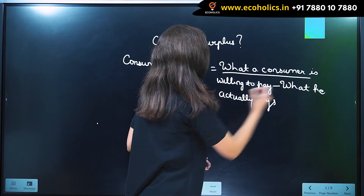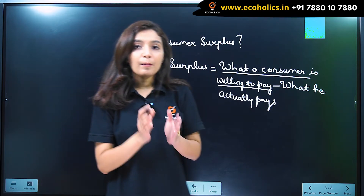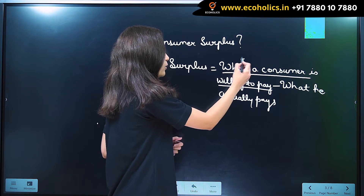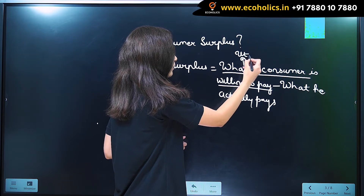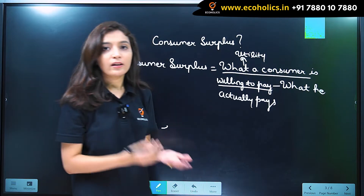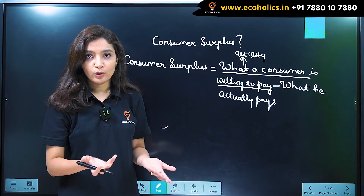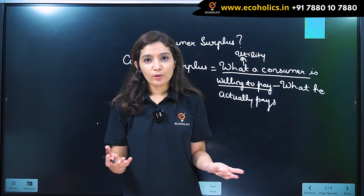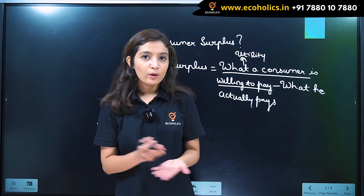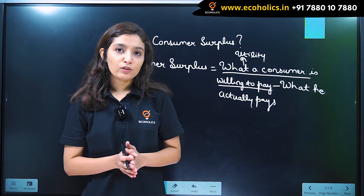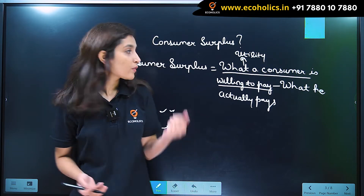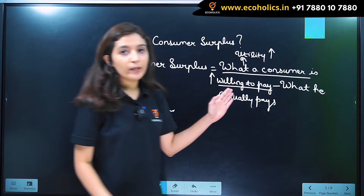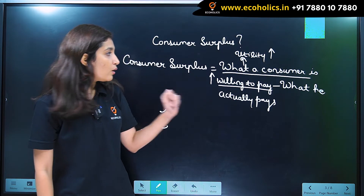Now, what is a consumer willing to pay? The amount of money a consumer is willing to pay depends on utility or satisfaction that he gets from consuming a certain good or commodity. If he gets a greater amount of satisfaction from consuming that commodity, the amount of money he would be willing to pay would obviously be greater. So greater the utility, greater would be the amount he would be willing to pay.